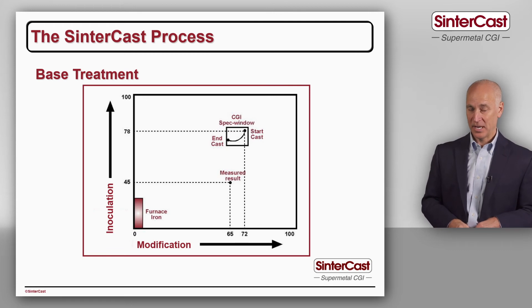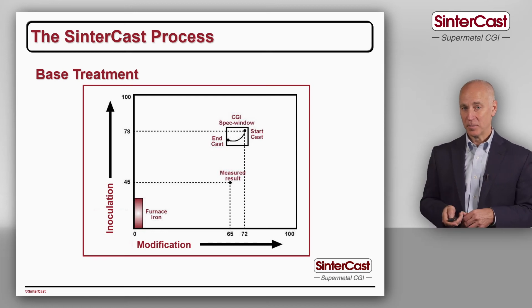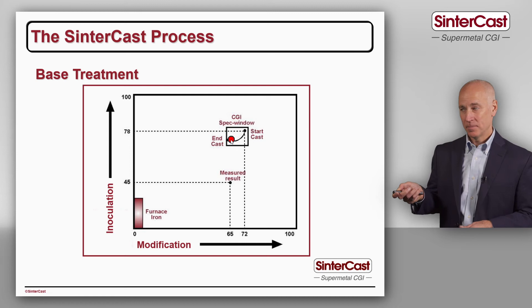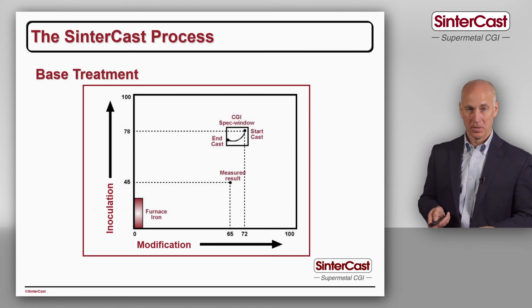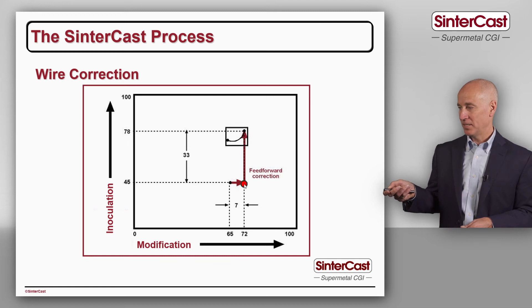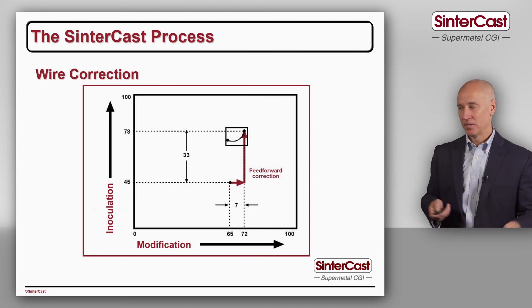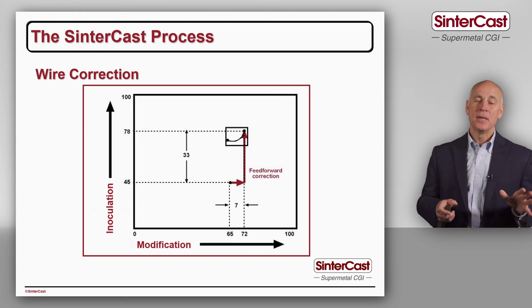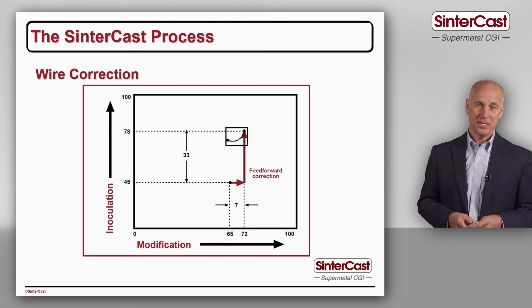Because magnesium is going to fade during casting time and the inoculant is also going to fade, starting in the top right corner allows us to stay inside the window before the end of casting. We know where we are and where we need to be, so it's a simple process to add more magnesium and more inoculant by cored wire before we start casting. In this example, we need seven units of magnesium — in a small ladle that might correspond to five meters of magnesium wire; in a large ladle, 15 meters. We add the magnesium first and shift over, then add the inoculant and shift up. In series production, our average magnesium addition was 37 grams per tonne, showing that this final correction step is a very precise, accurate addition.